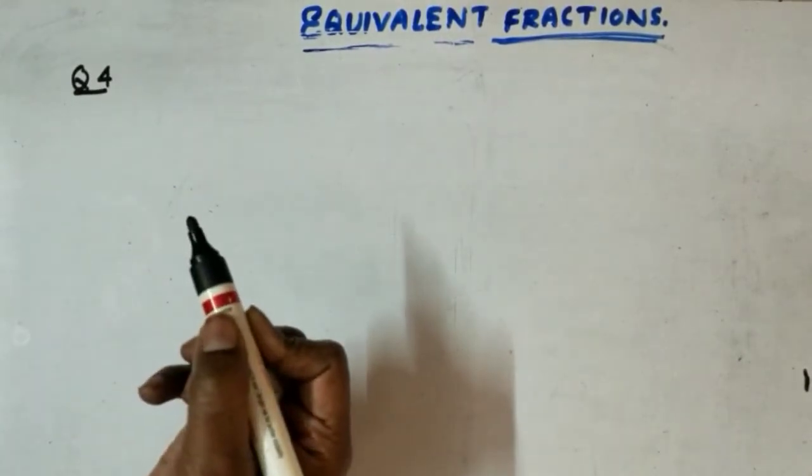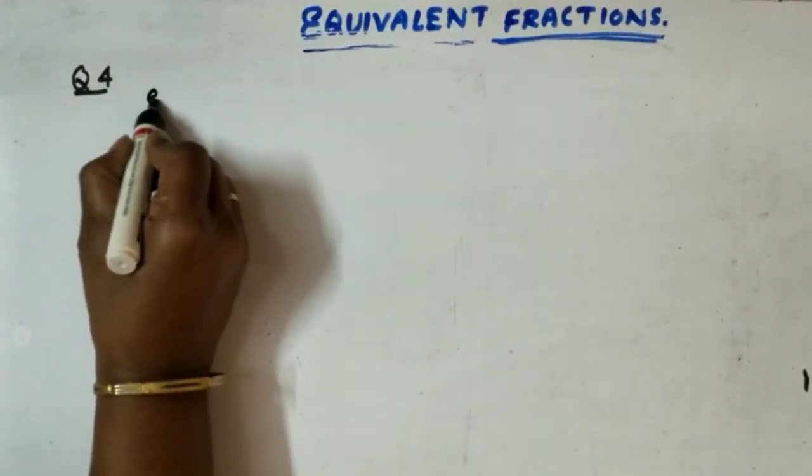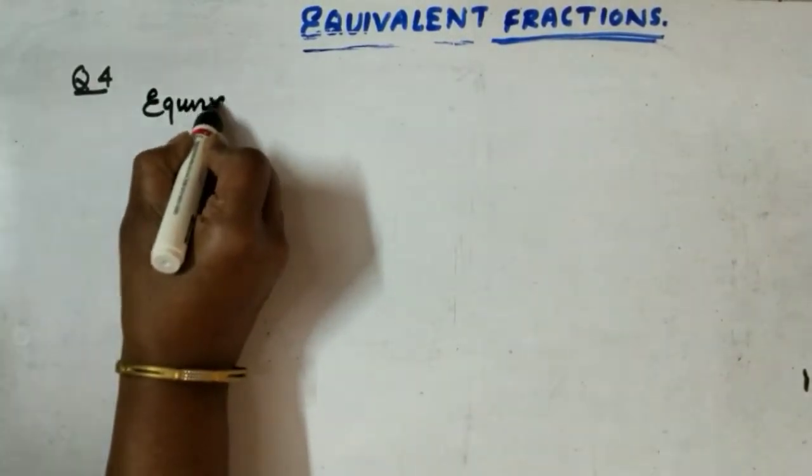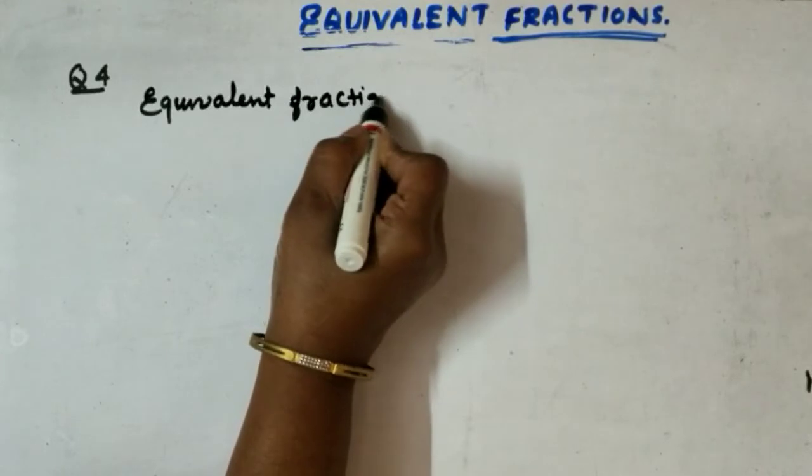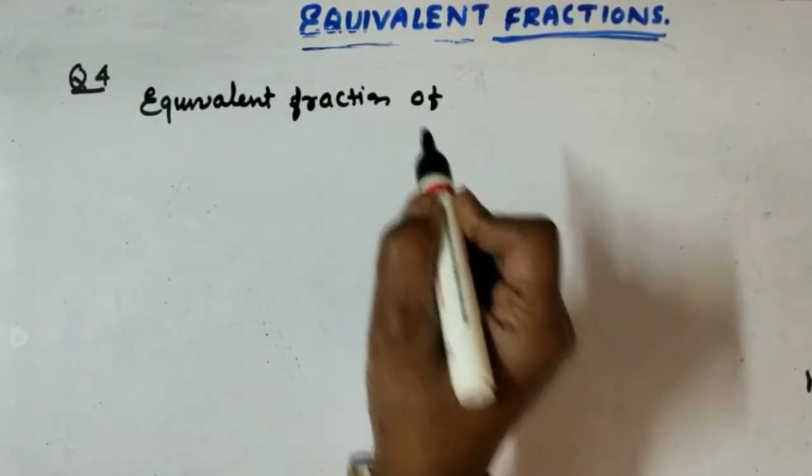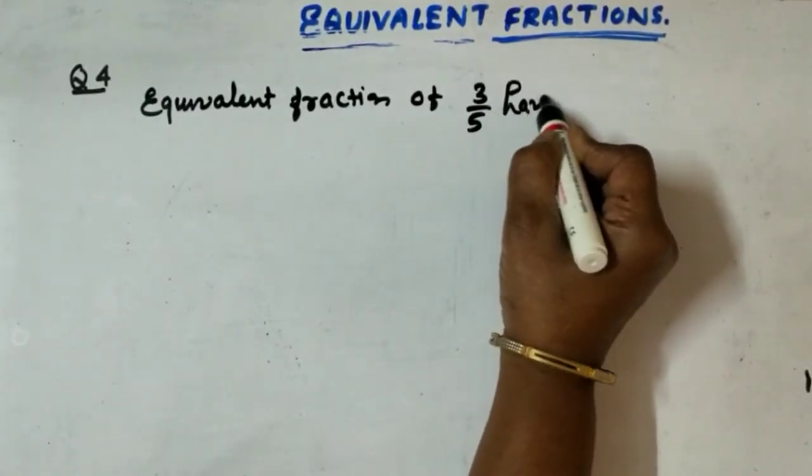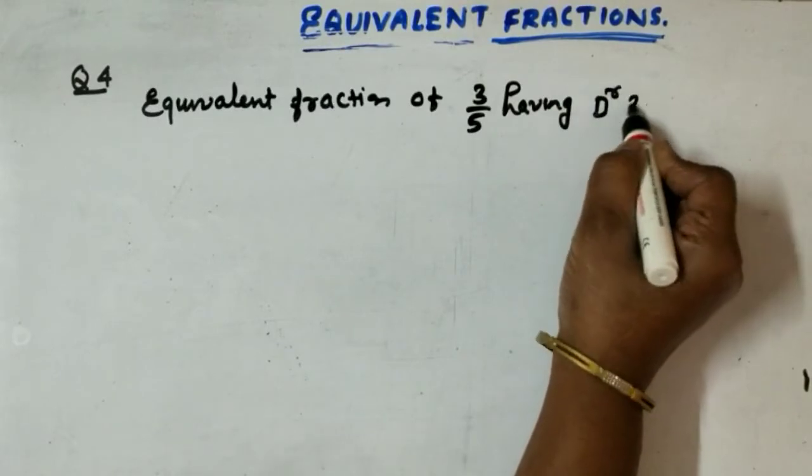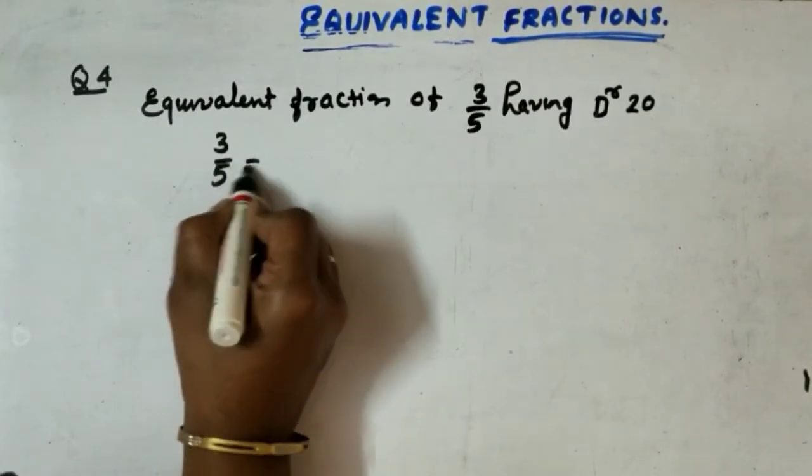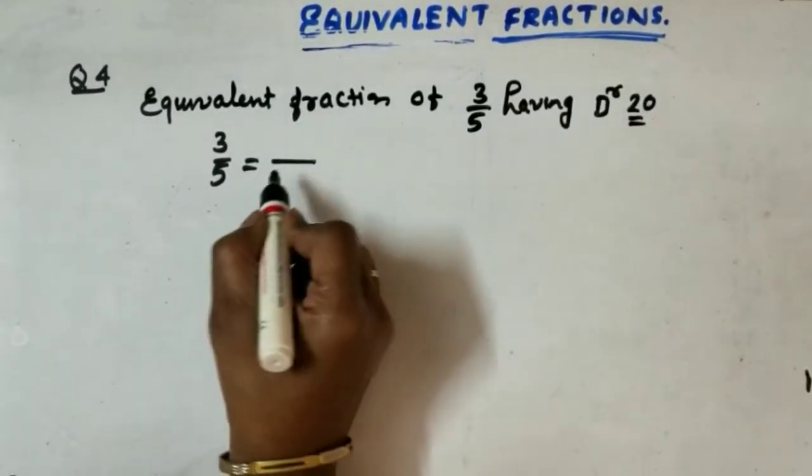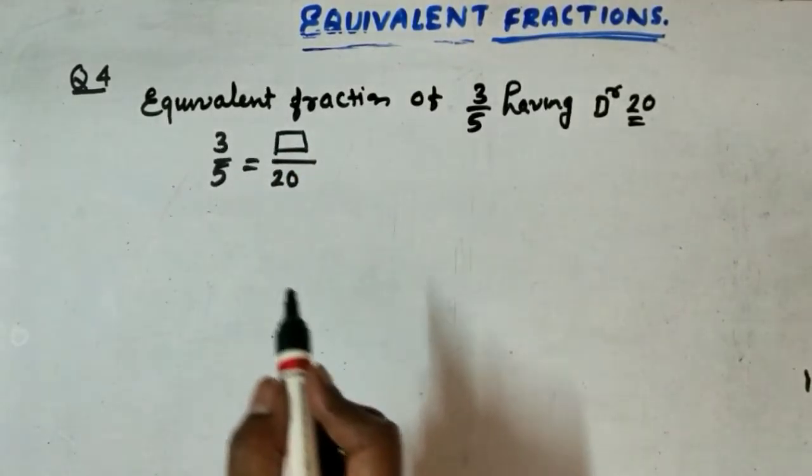The question is find the equivalent fraction of 3 by 5 having denominator 20. Now children, first of all you have to arrange this. 3 by 5 is equal to, here we are having denominator 20, so write here 20 and make here box.